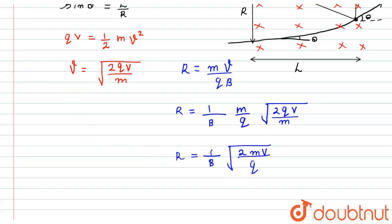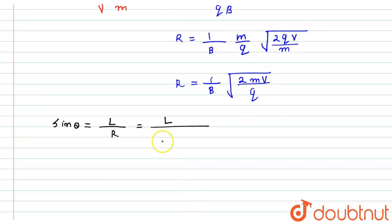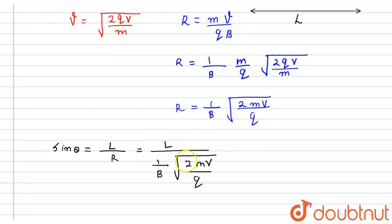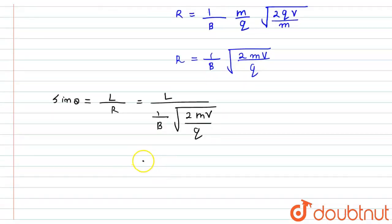So sin theta = L/R = L × B / √(2mV/q). Substituting the given values: thickness L = 0.1 m, potential V = 10⁴ V, mass m = 6.4 × 10⁻²⁷ kg, and magnetic field B = 0.1 T. After substituting all values, we get sin theta = 1/2.